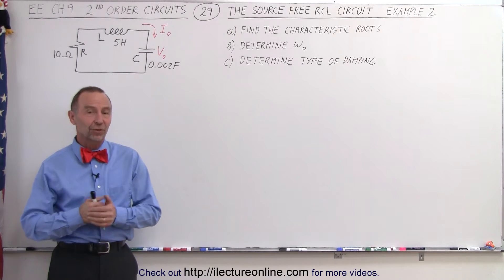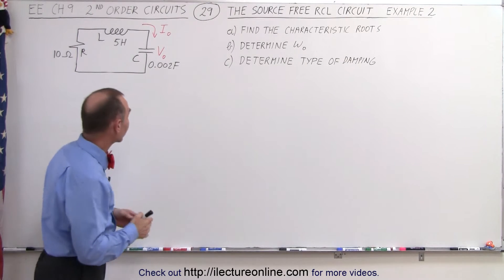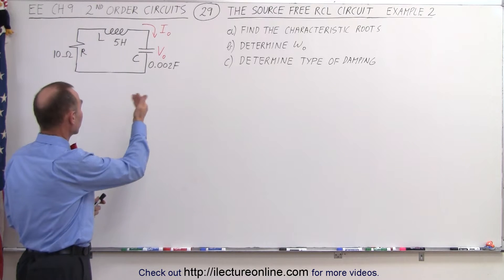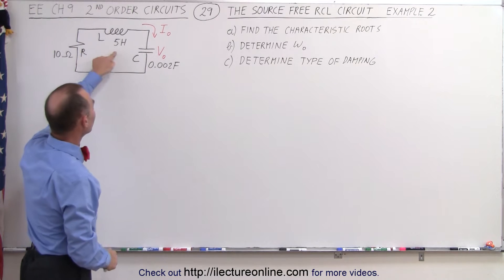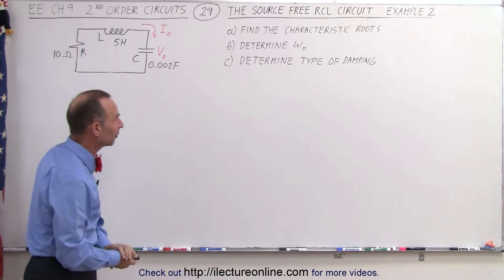Welcome to our lecture online. Here's our second example with a circuit that contains a resistor, an inductor, and a capacitor: 10 ohms, 5 henries, 0.002 farads.